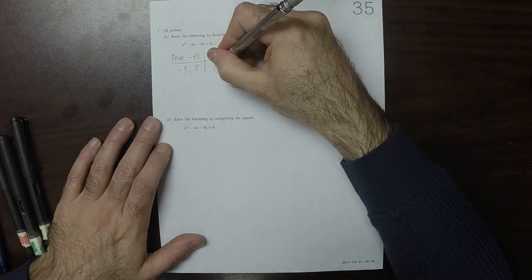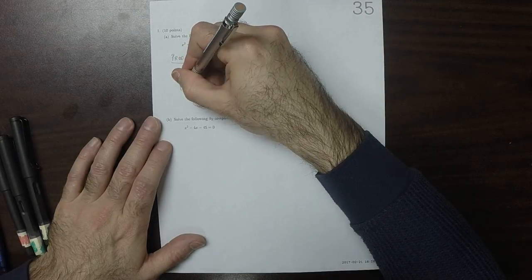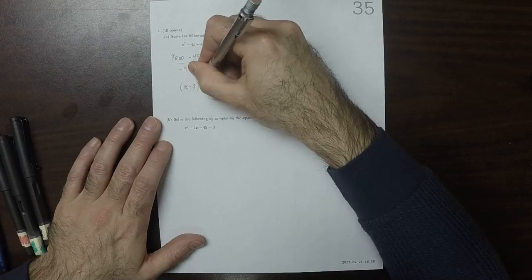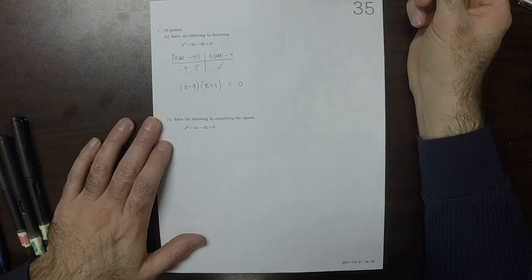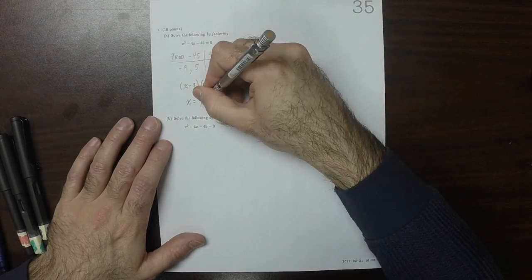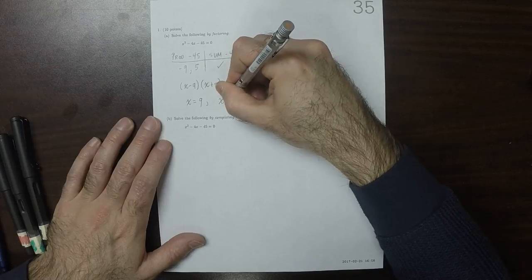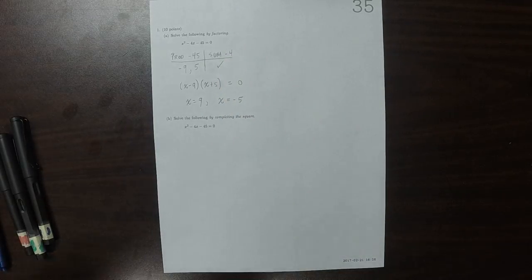Well, that works. So then the equation becomes x minus 9 multiplied by x plus 5 equal to 0. So the solutions are x is 9 and x is negative 5. So that's easy enough in Part A.